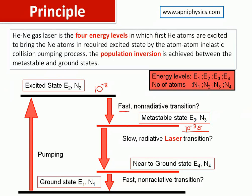Regarding fast transition: the lifetime of the excited state is very small — 10⁻⁸ seconds — compared to the meta-stable state which is 10⁻³ seconds. So the atom in the excited state immediately jumps into the next state, making that transition fast. The transition from the excited state down to E4 is slower because the lifetime of E4 is longer — most atoms will stay there longer.